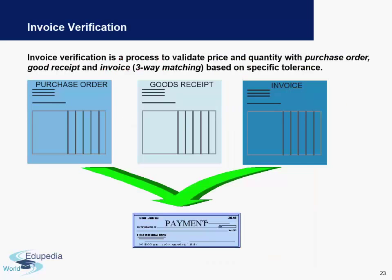The next slide covers invoice verification. Invoice verification is basically a three-way matching process. It looks at the purchase order, which covers things like material number, material description, and the quantity of goods ordered from the vendor. It then takes into consideration the goods received — for example, you may have ordered 100 units of a product but received only 80 units, and that becomes important at this stage.